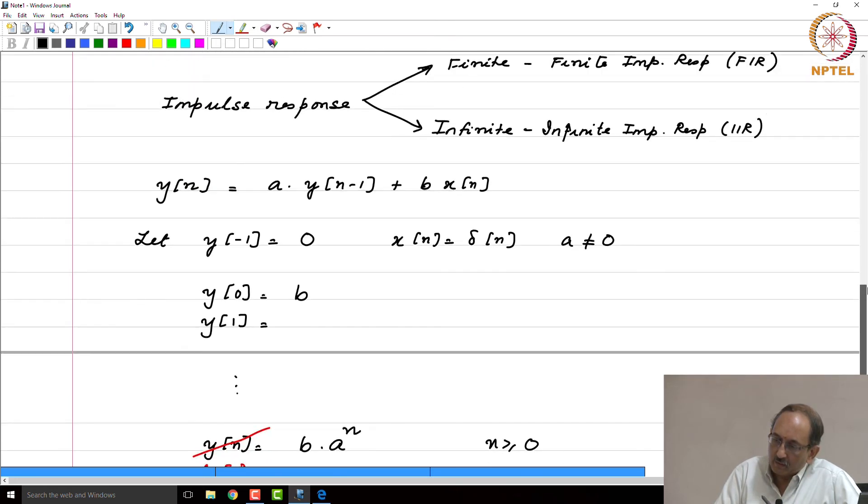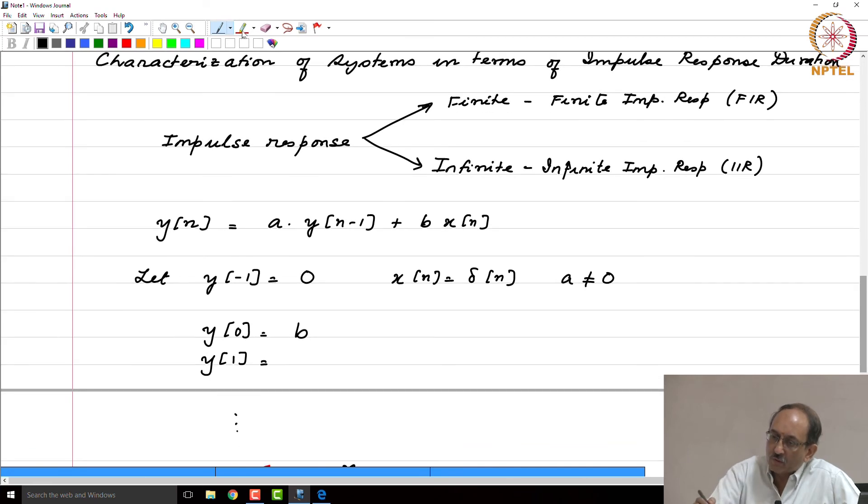Let us go back and look at this IIR example that we saw. We see that if the system is IIR, at least one aₖ is non-zero.